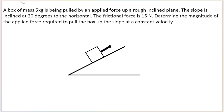A box of mass 5 kilograms is being pulled by an applied force up a rough inclined plane. This force over here is F applied, and we can see that it is parallel to the slope. The slope is inclined at 20 degrees to the horizontal, so this angle over here is 20 degrees. They give us the frictional force, which is 15 Newtons.